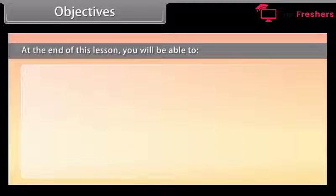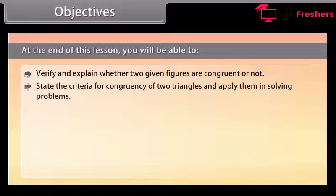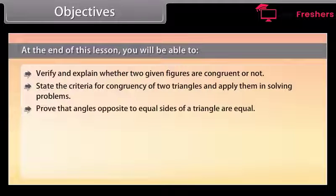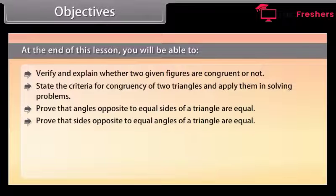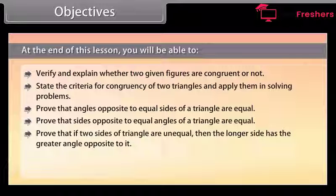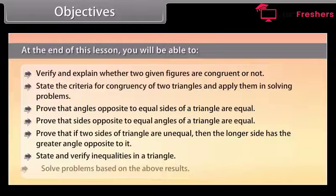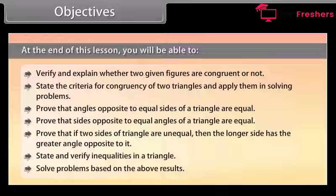At the end of this lesson, you will be able to: verify and explain whether two given figures are congruent or not; state the criteria for congruency of two triangles and apply them in solving problems; prove that angles opposite to equal sides of a triangle are equal; prove that sides opposite to equal angles of a triangle are equal; prove that if two sides of a triangle are unequal, then the longer side has the greater angle opposite to it; and state and verify inequalities in a triangle and solve problems based on the above results.